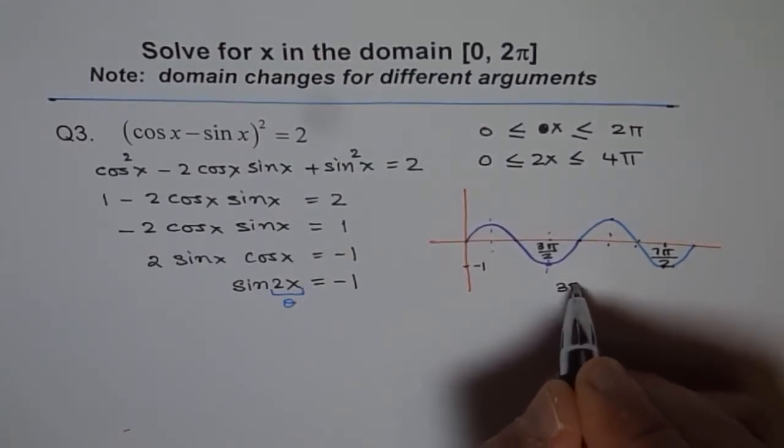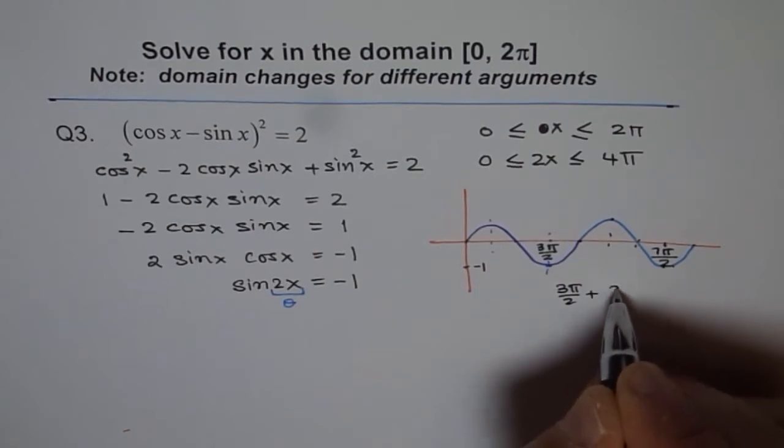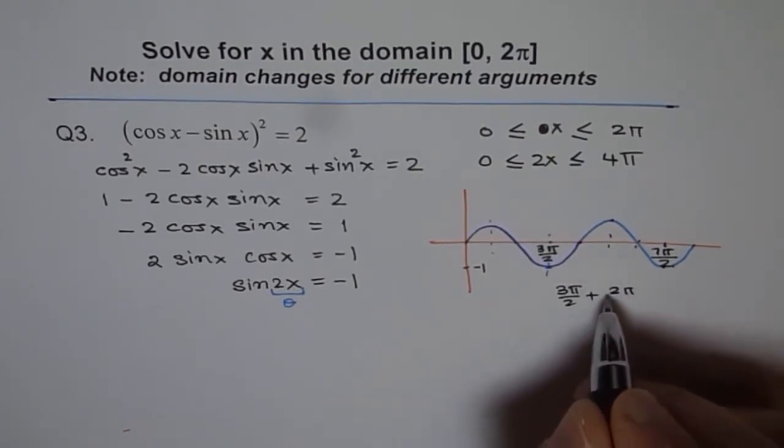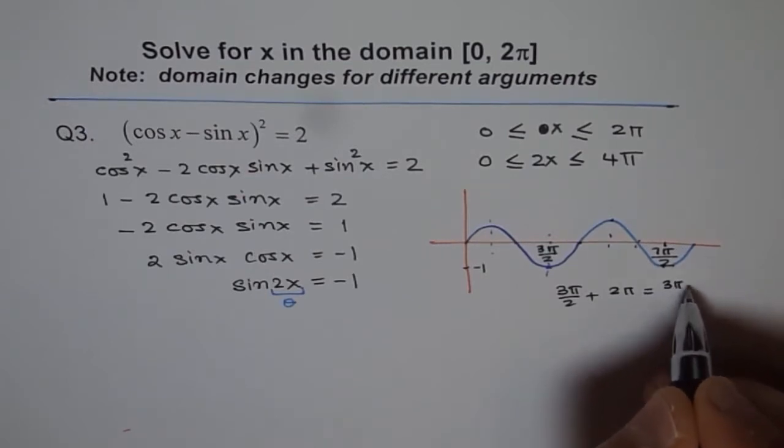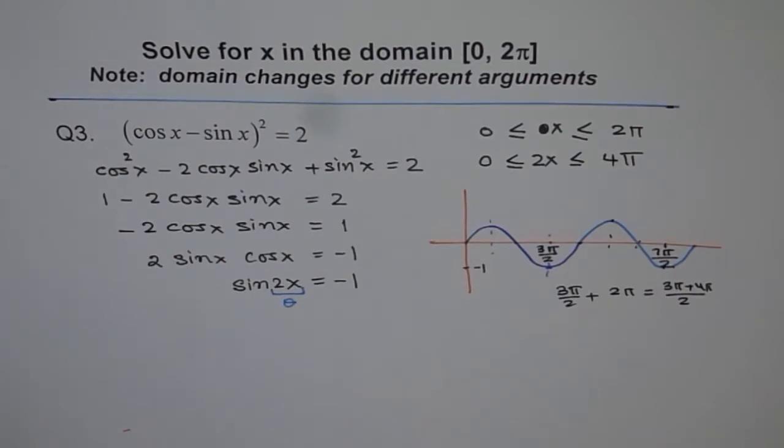We get this at 7π/2. You can also get it by saying 3π/2 + 2π. 2 times 2 is 4. So we get 3π/2 + 4π/2 and that is 7π/2. So you get 2 answers.